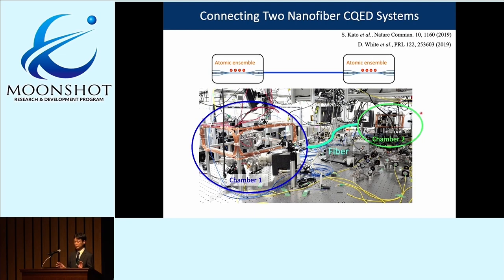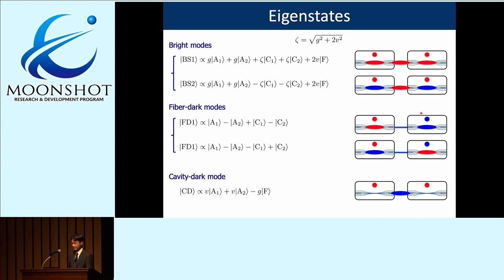Because the connection is made with such low loss, the two cavity QED systems are coherently coupled. An interesting physics we can investigate is that the whole system forms new normal modes—the system can be regarded as a coupled cavity QED system, analogous to classical coupled oscillators with five oscillators: two atomic ensembles, two cavities, and the connection channel. The system therefore has five normal modes grouped into three categories: bright modes, fiber dark modes, and cavity dark modes. We have observed all of these normal modes.